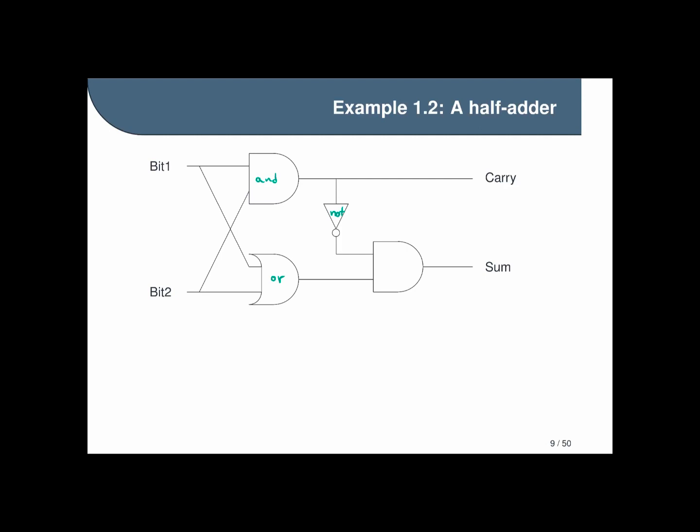The value of our sum and carry bits in our output can be expressed as propositional formulas, where the carry bit is true when bit one and bit two are true, and the sum bit is true when either of those bits are true but not both. I'll leave it as an exercise for you to verify that this is in fact the behavior that we want from a half adder. That concludes all the applications I'm going to show you right now.